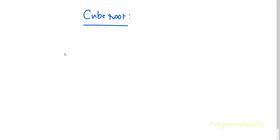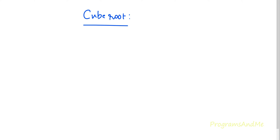If I take the cube root of 27, that is 3, because when 3 is cubed you get 27. In general, the cube root of x can be written as x power 1/3. So cube of x is x³ and cube root of x is x^(1/3). Now we know what cube and cube root are.